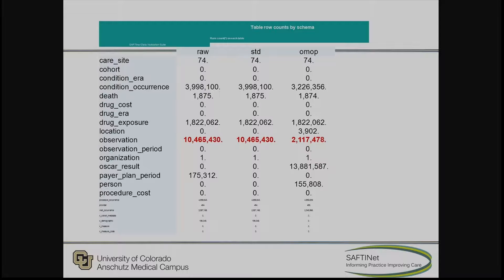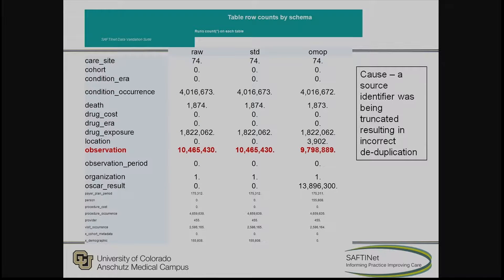One thing I wanted to highlight: we had a partner with over 10 million observations, but when we got to the OMOP table, we were down to 2 million. Something was wrong. Between the standard and OMOP transformation, there's a deduplication step and concept ID mapping — mapping source codes to OMOP standard concept IDs. What was happening was the partner had truncated their source identifiers, so our deduplication process was seeing them as the same and deduplicating all those records. It was pretty easy to correct once identified.